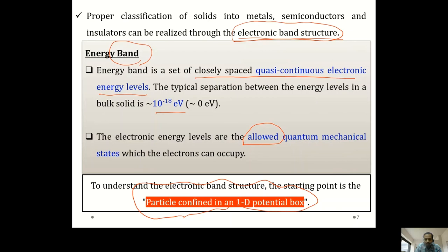Today we will start with the classical free electron theory of metals. It is conventional to study the properties of metals first and try to explain them, and gradually we will see that this understanding will help us comprehend semiconductors and insulators in a better manner. So let us start with the properties of solids and try to explain them using classical theory.